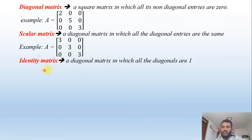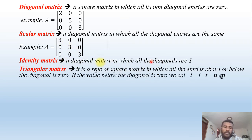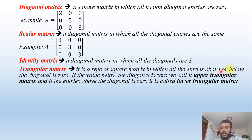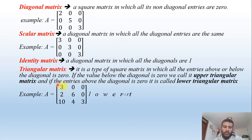The identity matrix is a diagonal matrix in which all diagonal entries are 1. If we change the diagonal values to 1, we call it an identity matrix. The next type is the triangular matrix, a type of square matrix in which all entries above or below the diagonal are zero. If the entries below the diagonal are zero, it is called an upper triangular matrix; if the entries above the diagonal are zero, it is called a lower triangular matrix.